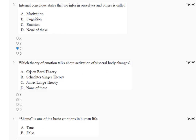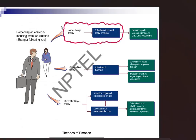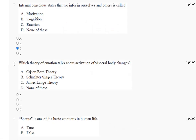Question number three: which theory of emotion talks about activation of visceral body changes? The explanation of question number three is here. The correct answer to question number three is option number C — the James-Lange theory.